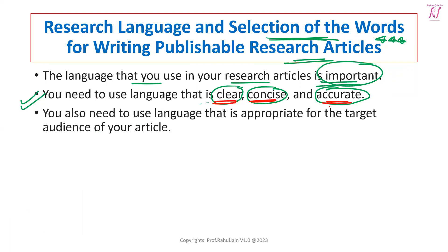Whatever you want to say should be easily and accurately understandable by other persons. This means you should be able to convey your ideas meaningfully to others. You also need to use language that is appropriate for the target audience of your article. Ultimately, the language should be proper, clear, concise, and very accurate — whatever ideas you have should be conveyed exactly as intended to all other persons who read your articles.